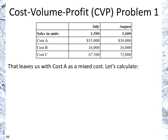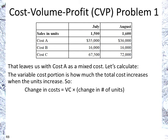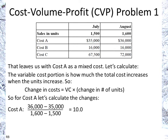That leaves us with cost A as a mixed cost. To confirm, for it to be an appropriate mixed cost, you would have to have a positive fixed value and a positive variable cost. The variable cost can be determined by seeing what is the increase in cost due to an increase in the number of units produced or sold — the change in cost equals the variable cost times the change in number of units. Here we have a change of 100 units from 1,500 to 1,600, and a change in costs of 1,000. So you take 36,000 minus 35,000 over 1,600 minus 1,500, which gives us $10.